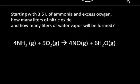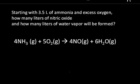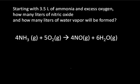For example, starting with 3.5 liters of ammonia and excess oxygen, how many liters of nitric oxide and how many liters of water vapor will be formed? Looking at this balanced chemical equation, we can read it in terms of moles: four moles of ammonia will react with five moles of oxygen gas to give four moles of nitric oxide plus six moles of water vapor.